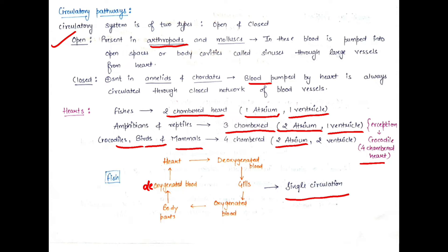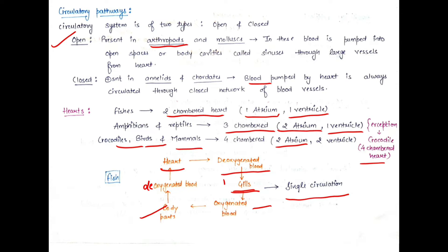In single circulation, blood circulates through the heart once per cycle. The heart pumps deoxygenated blood to the gills, where it is oxygenated. The oxygenated blood is then transferred to different body parts where oxygen is required. The body parts exchange CO2 and O2 — blood arriving is oxygenated but when it leaves it is deoxygenated. The deoxygenated blood then returns to the heart and the cycle continues.